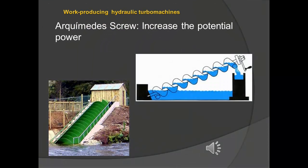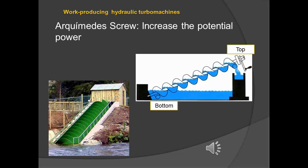Due to the rotational effect of the Archimedes screw, the water at the bottom achieves to arrive to the top and for this reason the potential power is bigger.